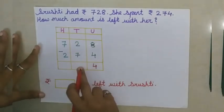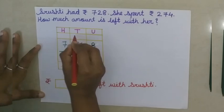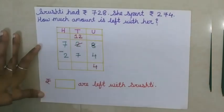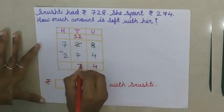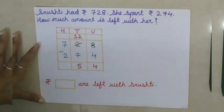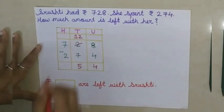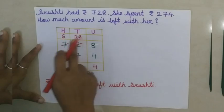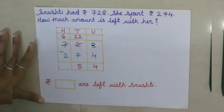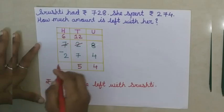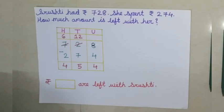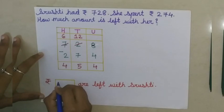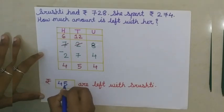Now, 2 minus 7, this is not possible. So I am going to borrow here 1. So it will be 12 units. 12 minus 7, the answer is 5. Here will be 6 because we borrowed from the hundreds place. So I have written here 6. 6 minus 2 is 4. Read the number: 454. The final answer is rupees 454.